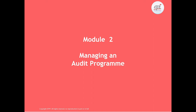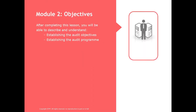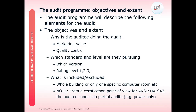Under Module 2, we will look at how to manage an audit programme. The objectives of Module 2 will be: first, to establish the audit objectives, and second, establishing the audit programme with the auditee company. We show some of the elements of an audit programme — the objectives and the extent.